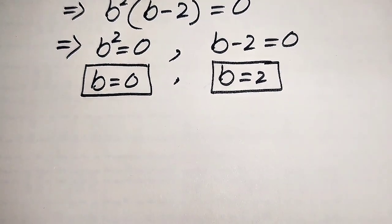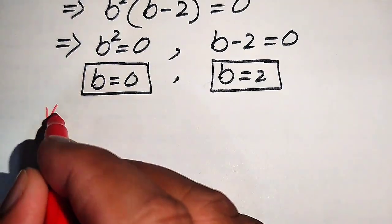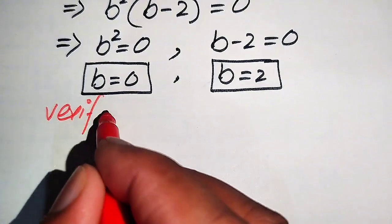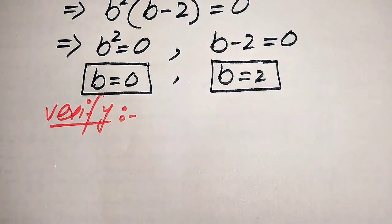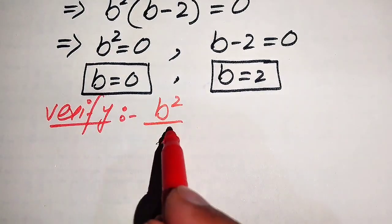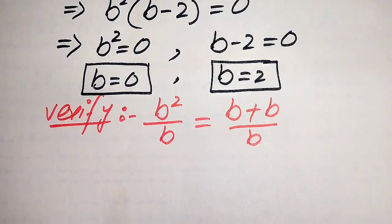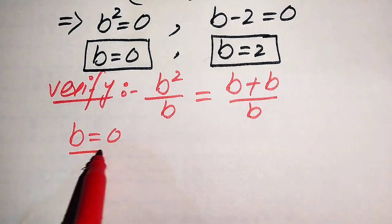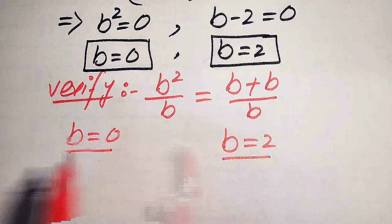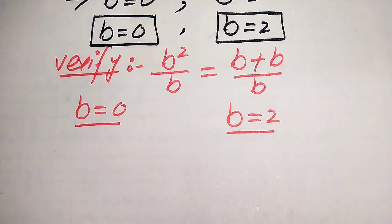Now we need to verify whether these roots satisfy the given equation statement or not. For verification, we copy down the given equation: b squared divided by b equals b plus b divided by b. On this side we will verify b equals 0, and on this side we will verify b equals 2.